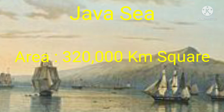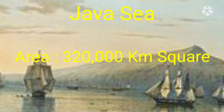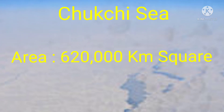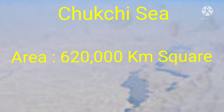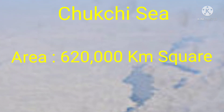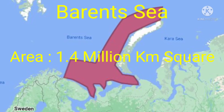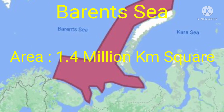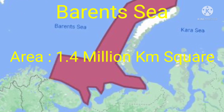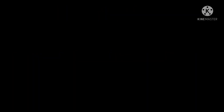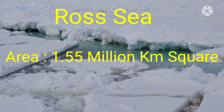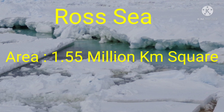Java Sea — the area of the Java Sea is 320,000 km². Chukchi Sea — the area of the Chukchi Sea is 620,000 km². Barents Sea — the area of the Barents Sea is 1,400,000 km². Ross Sea — the area of the Ross Sea is 1,550,000 km².